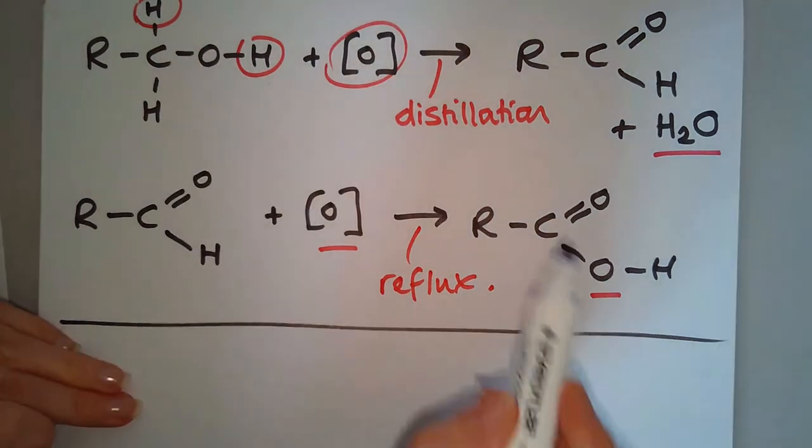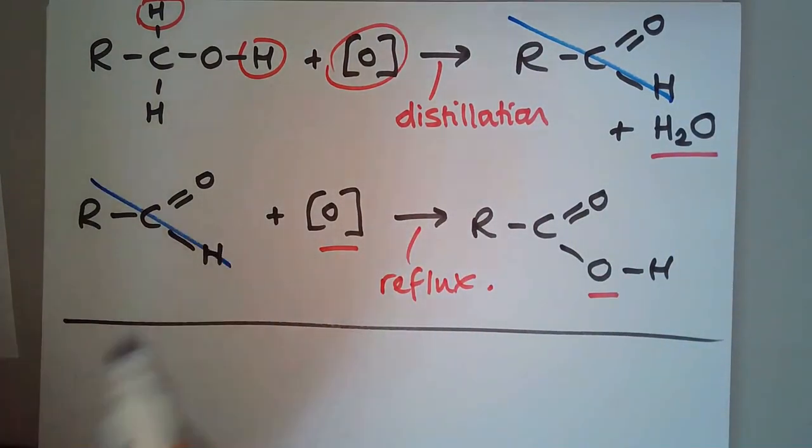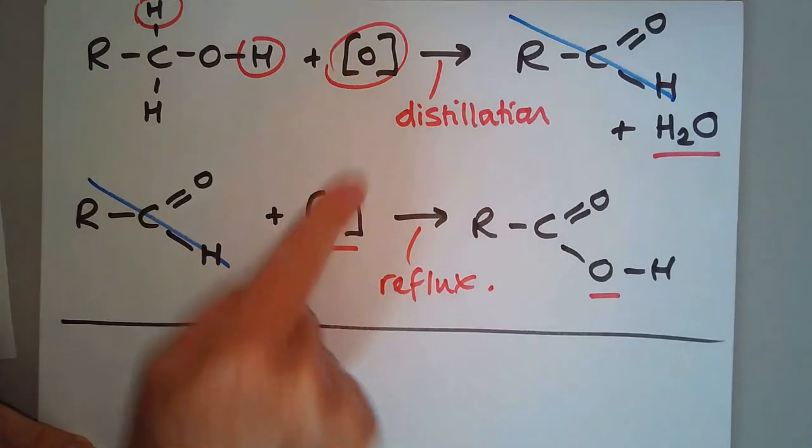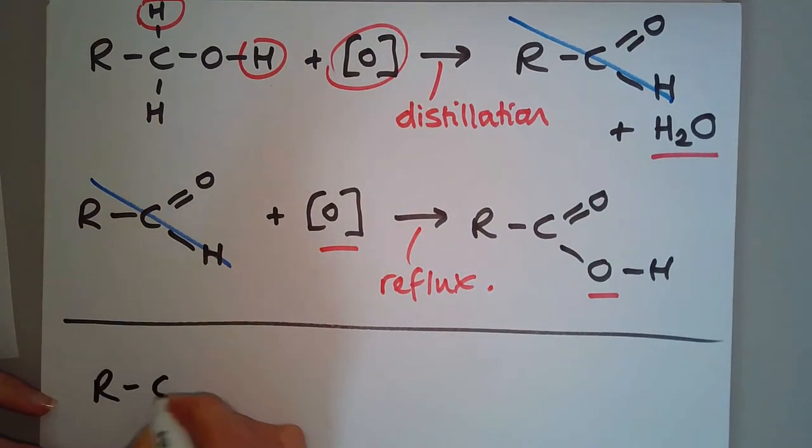Hopefully you can see that we're making the aldehyde in step one but we're using it up in step two. So that's like an intermediate that we can cancel out. If we add everything on the left-hand side of the arrow, we can start with our primary alcohol.